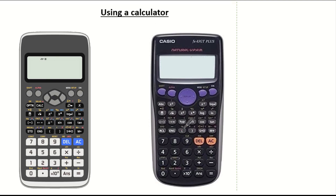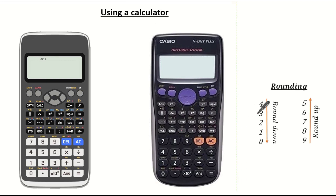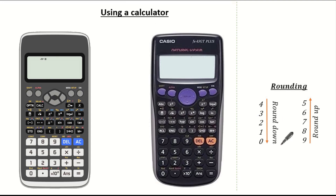Remember with rounding always look at the digit to the right. If the digit to the right is a 0, 1, 2, 3 or 4 we always round down.